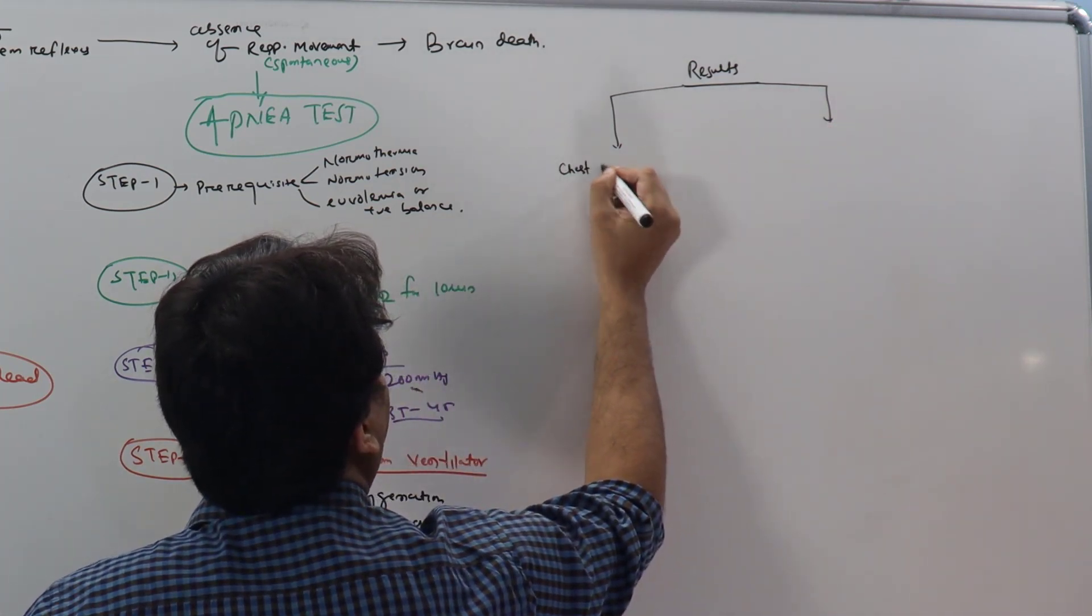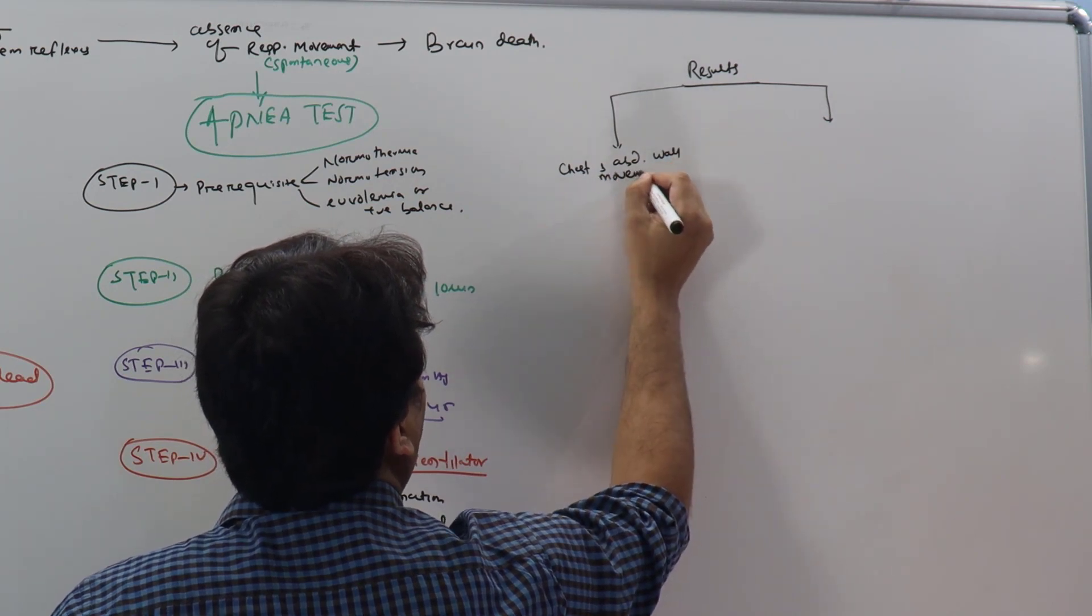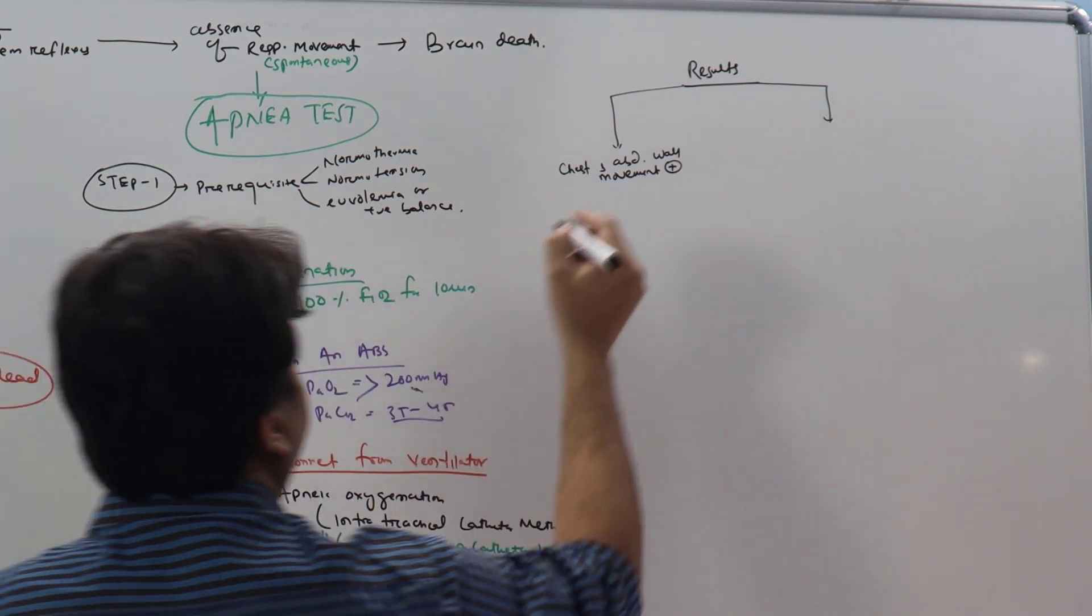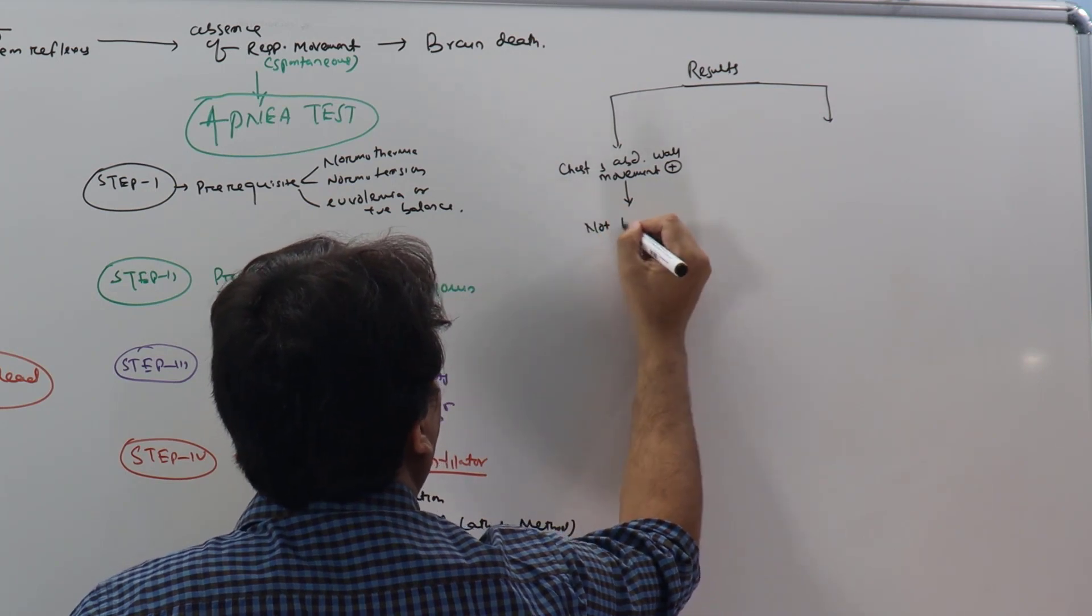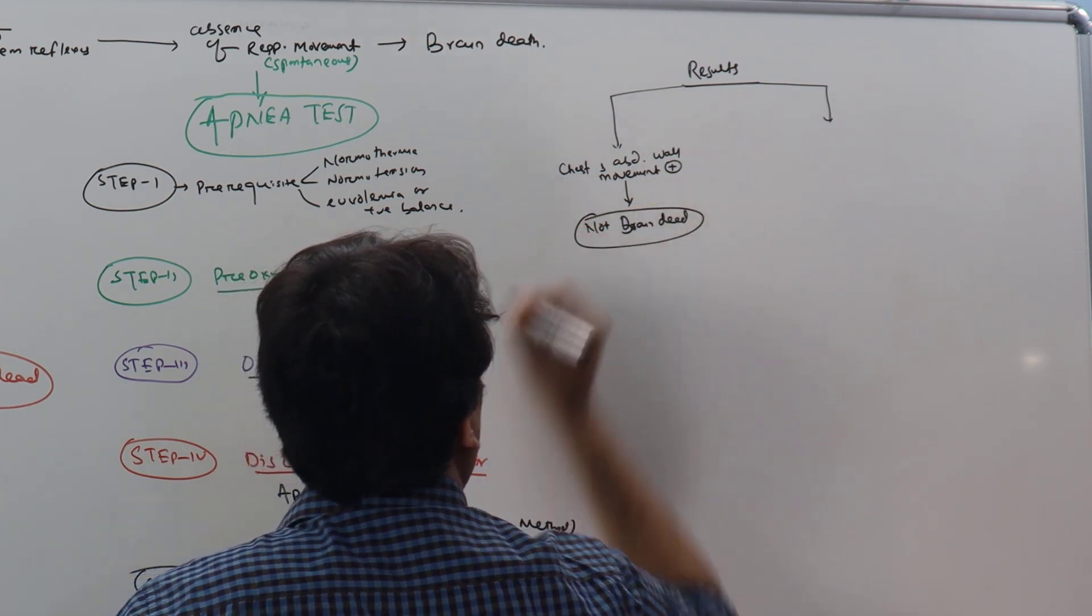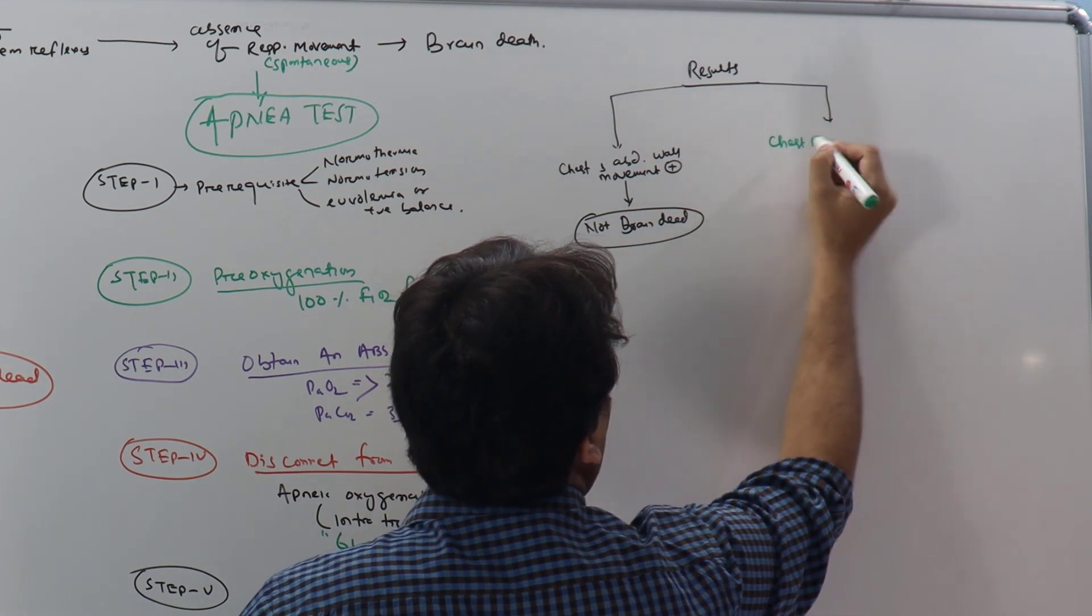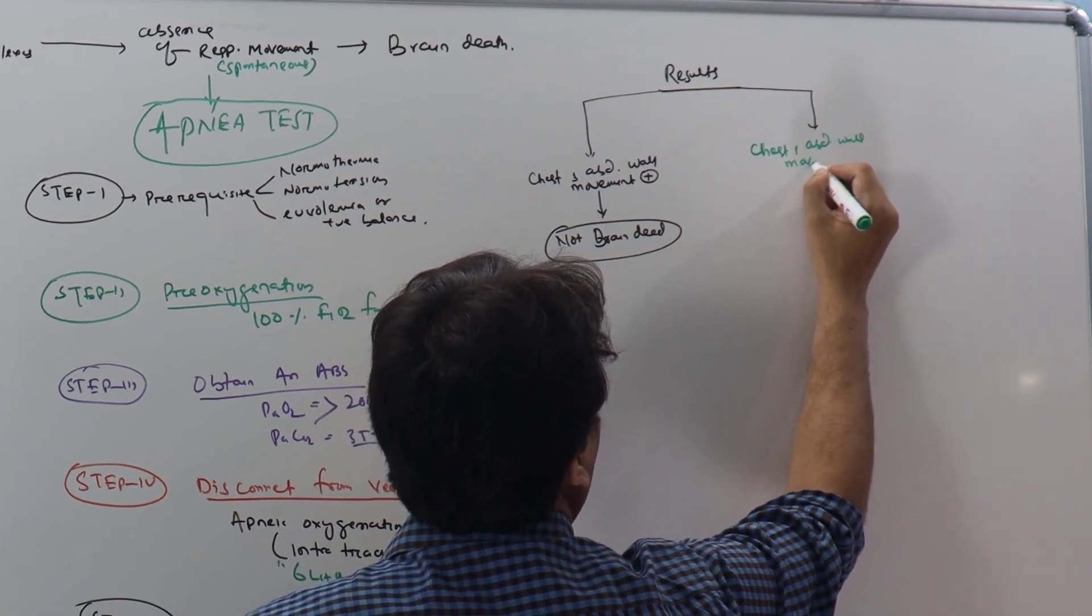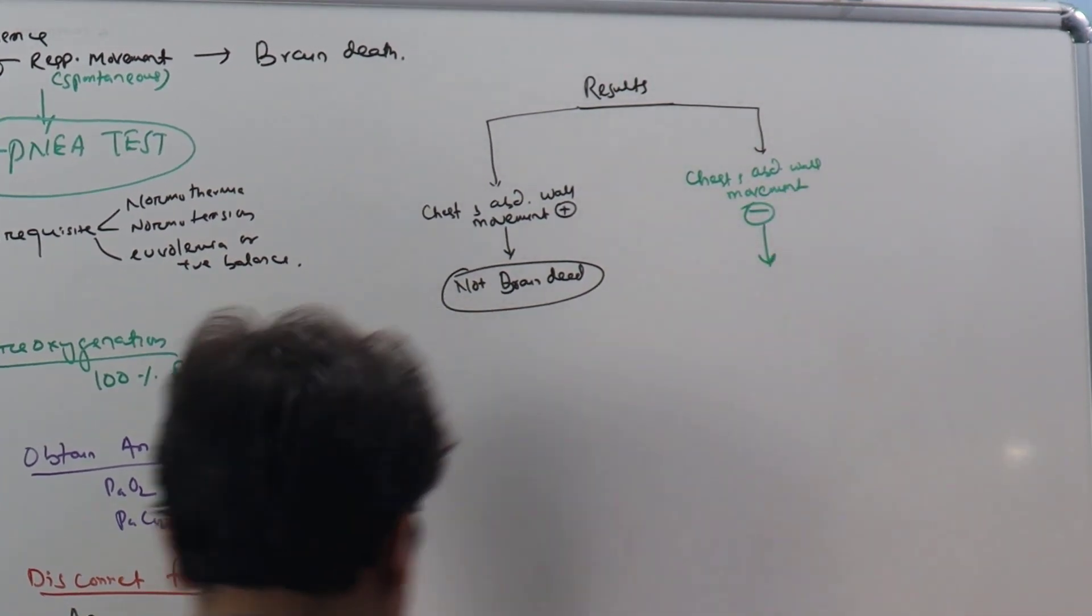If chest and abdominal wall movement is positive, what does it mean? That means the brainstem is functioning, so patient is not brain dead. However, if chest and abdominal wall movement is not there, in this case you have to check the ABG next.